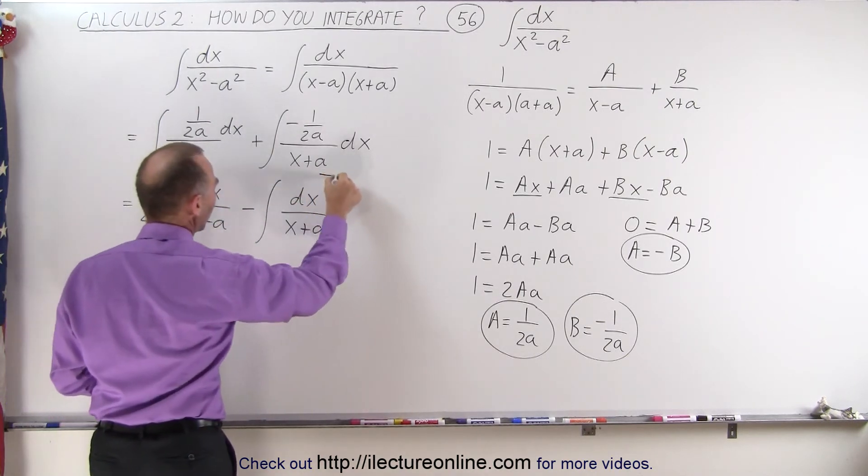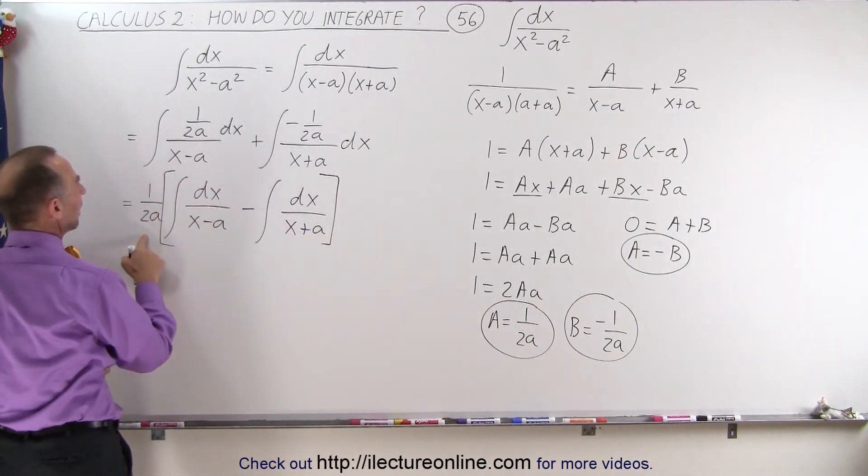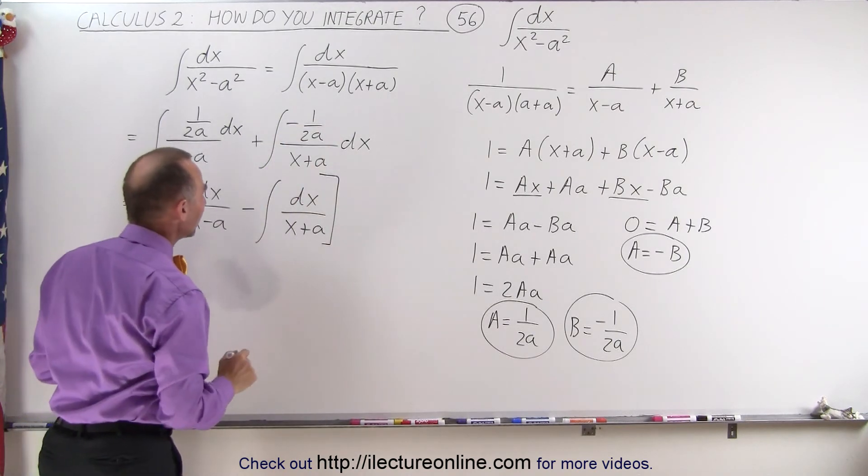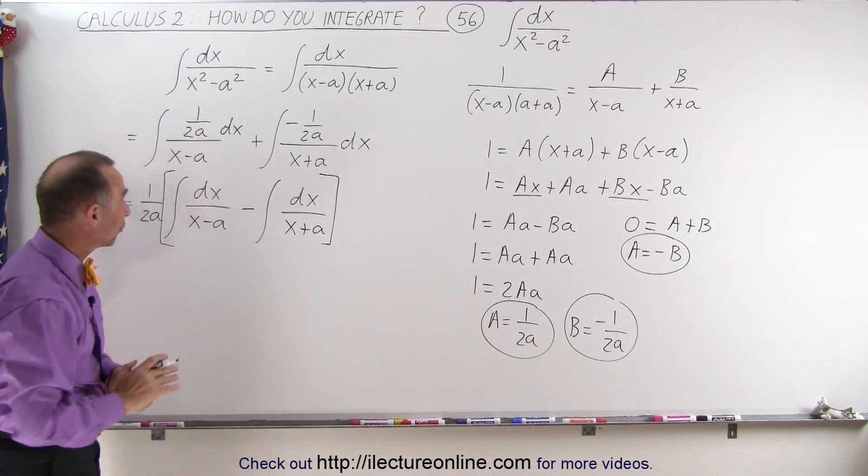And then we have minus the integral of dx over x plus a. And let's put some brackets around that. So we've pulled out a 1 over 2a. This becomes dx over x minus a minus dx over x plus a. And now we can go ahead and integrate those two integrals. They're relatively easy.